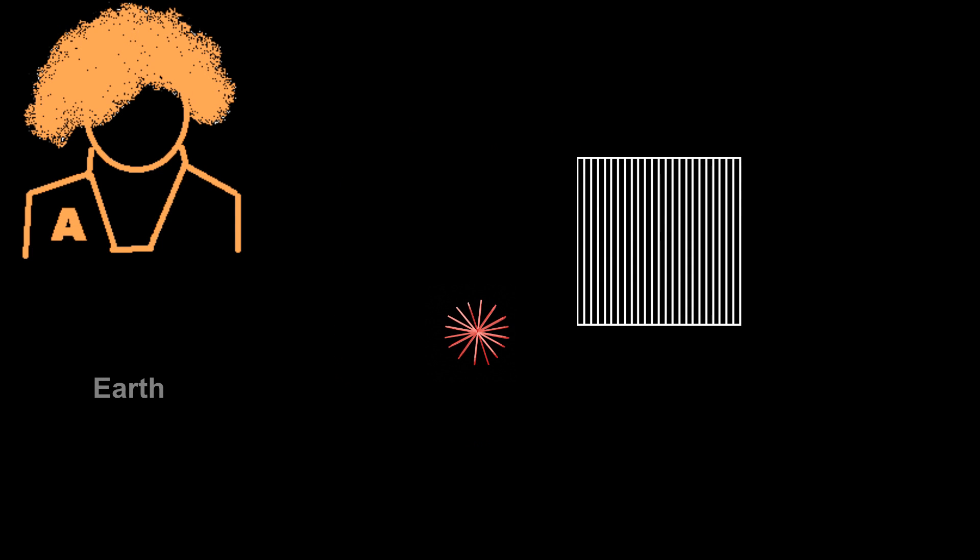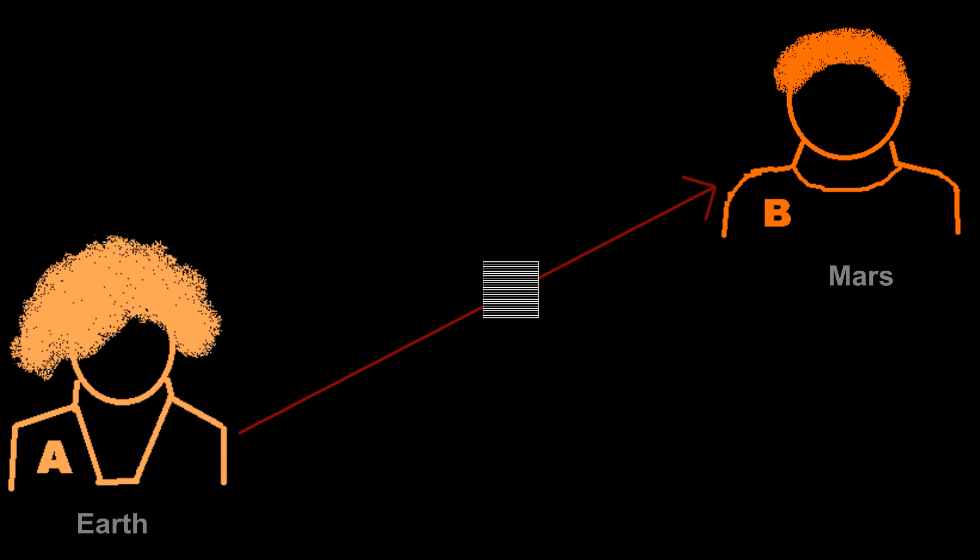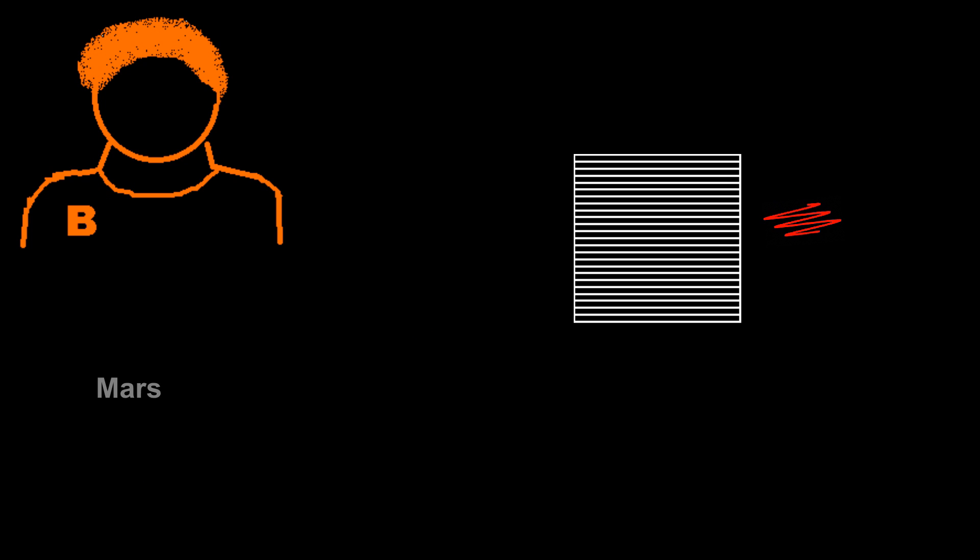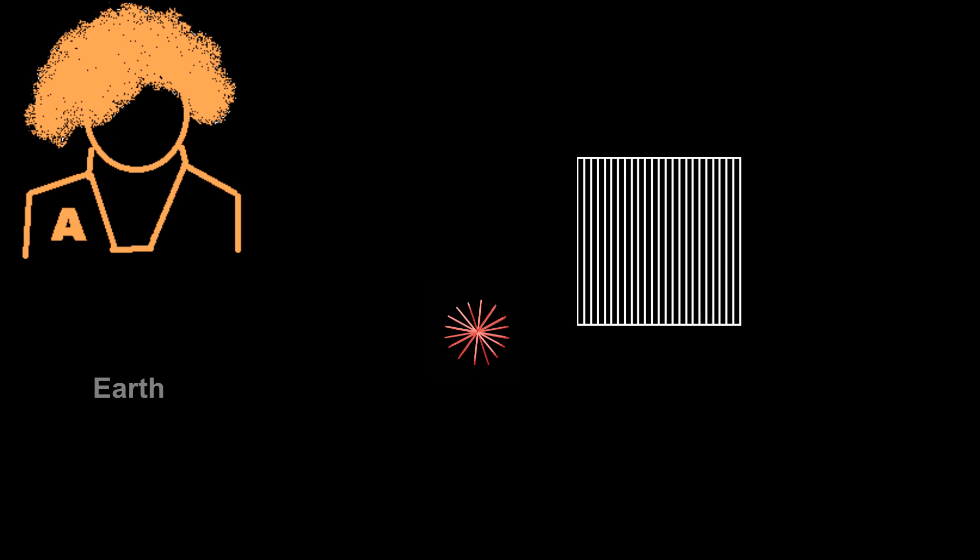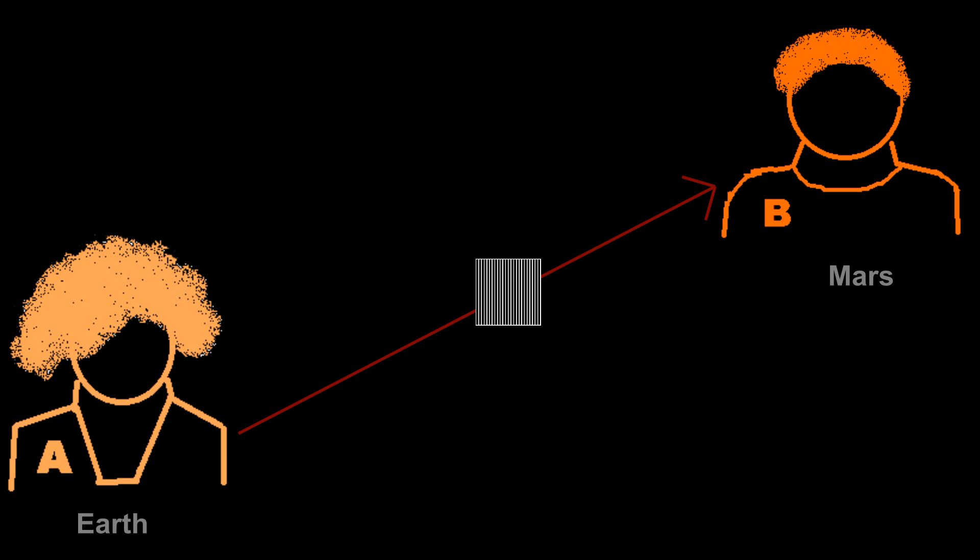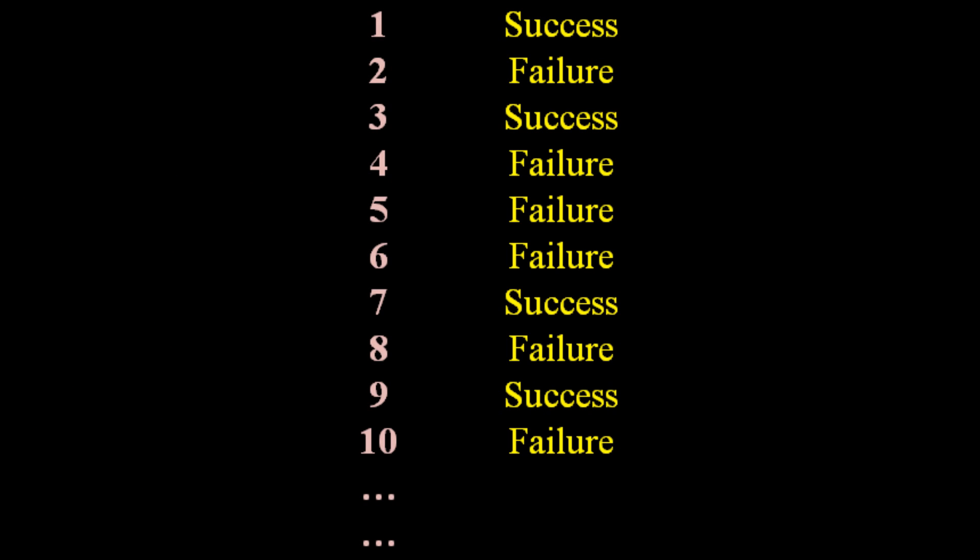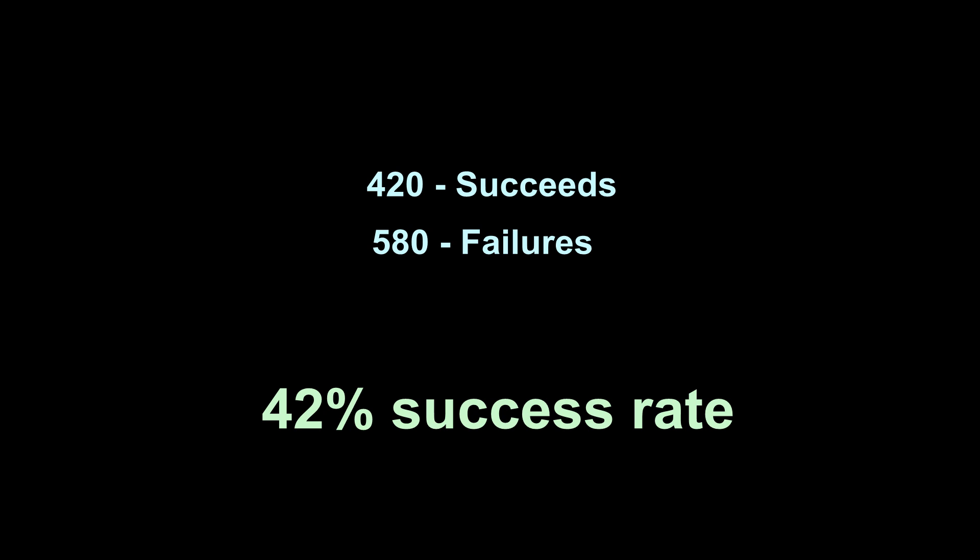She first tries with vertical filter and found passed. So she sent message to Bob to use horizontal filter. Bob then uses horizontal filter and found passed. Second time, Alice uses the same vertical filter and found blocked. So she sent message to Bob to use vertical filter. Bob uses vertical filter and found his photon also blocked. So failure. Third time success. Fourth time failure. Fifth time failure. Sixth time failure. Seventh time success. And so on. At end of the test, they got 42% of success rate.